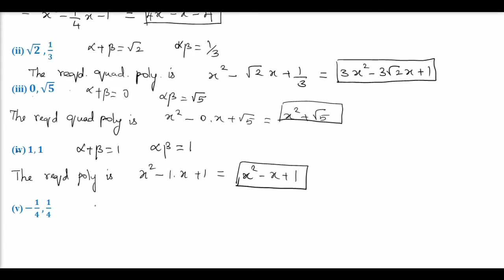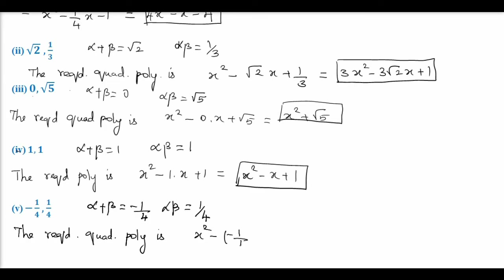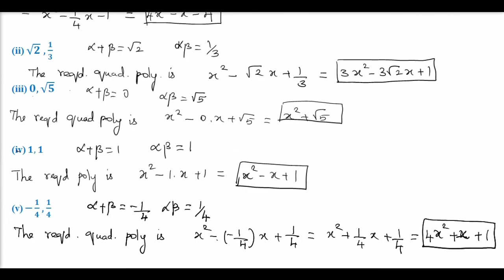Now let's pass on to the fifth subdivision: the sum of zeros is −1/4 and the product of zeros alpha into beta is 1/4. The required quadratic polynomial is X square − (−1/4)X + 1/4. That equals X square + (1/4)X + 1/4, because minus into minus gives plus. This can also be written by multiplying by 4 as 4X square + X + 1. So this is the required polynomial.